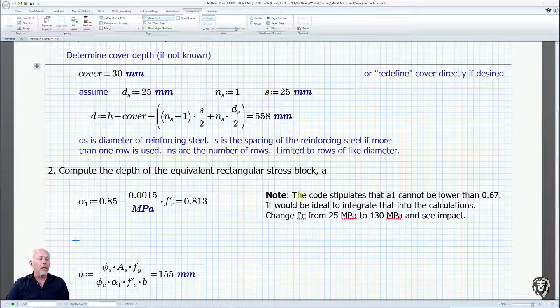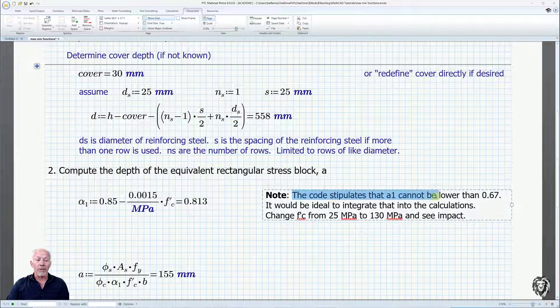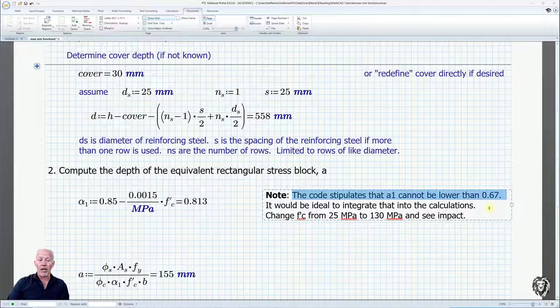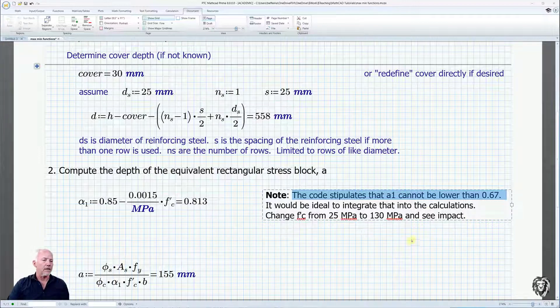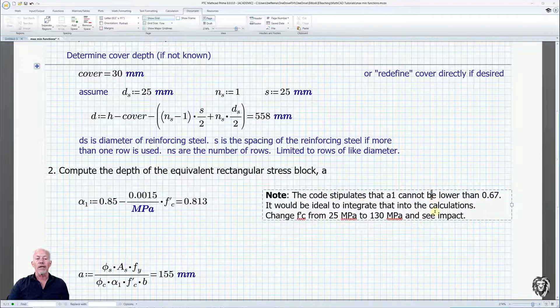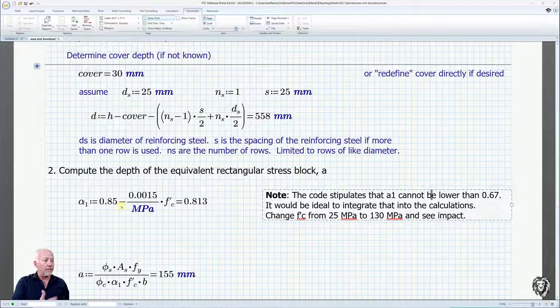However, one of the stipulations in the code, if you actually look up the clause and there should be a reference to the clause here if we're annotating this effectively, is that it also cannot be lower than 0.67. And so this equation, while great and it's calculating it, it's incomplete